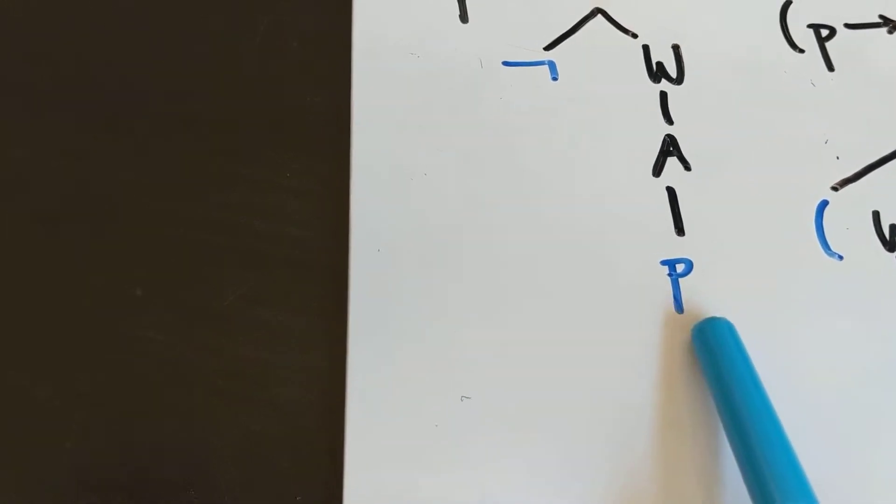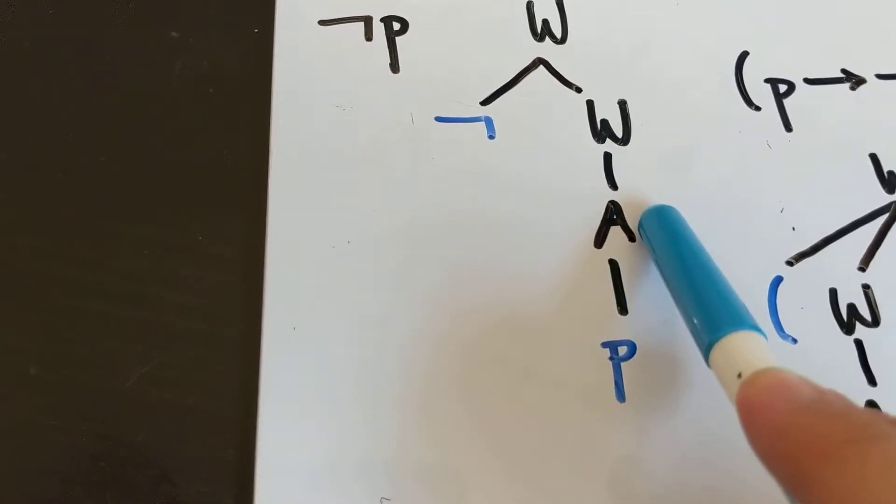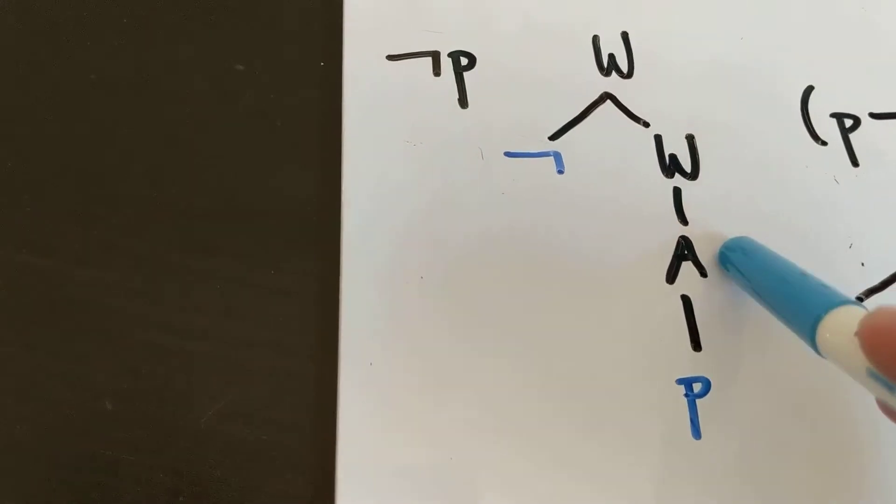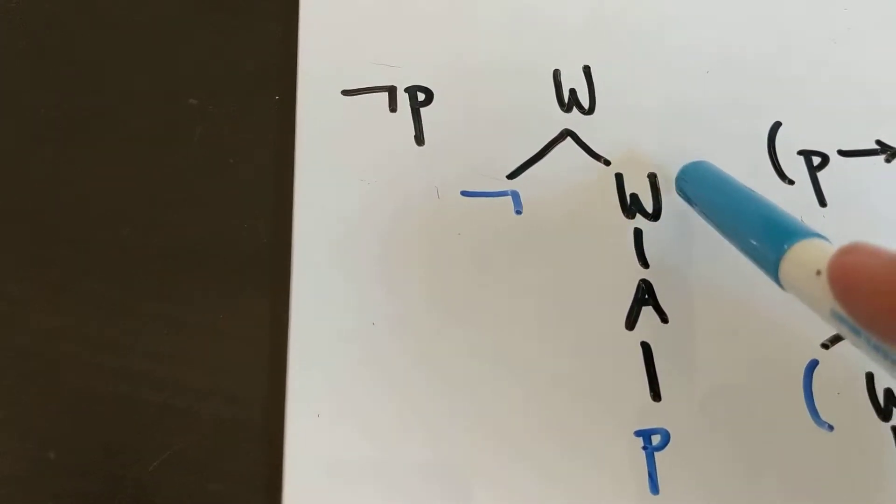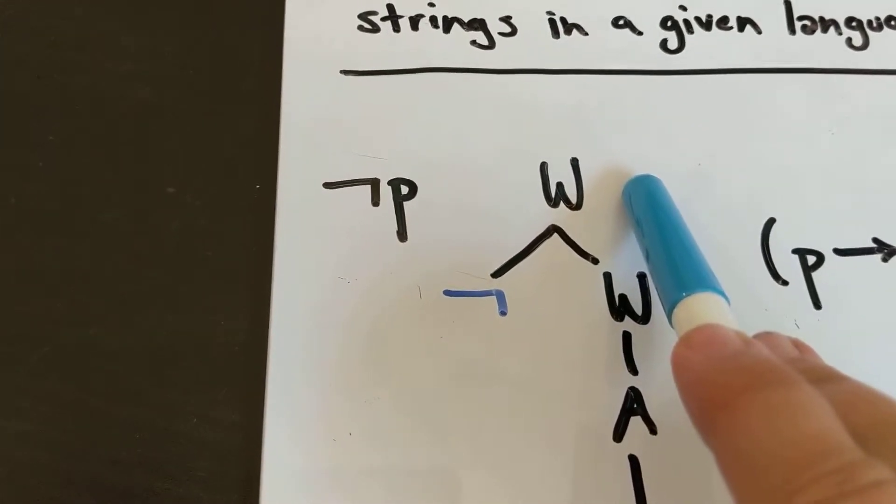We can start down here and say that, well, we have a P. We know that that is a basic statement. We know that if we have a basic statement, we have a well-formed formula, and we know that any well-formed formula plus the not symbol is also a well-formed formula.